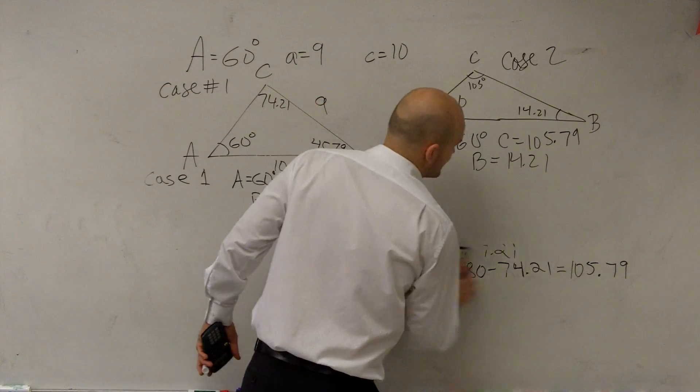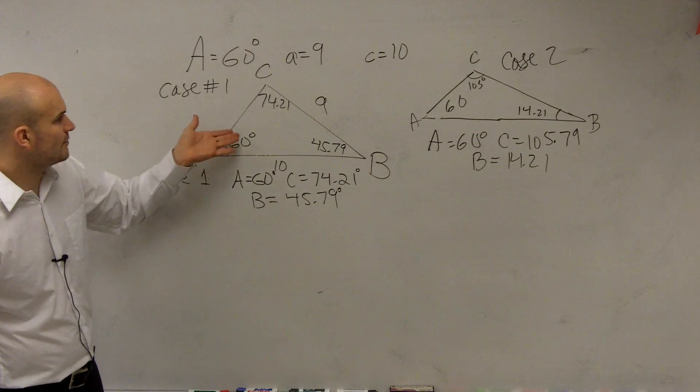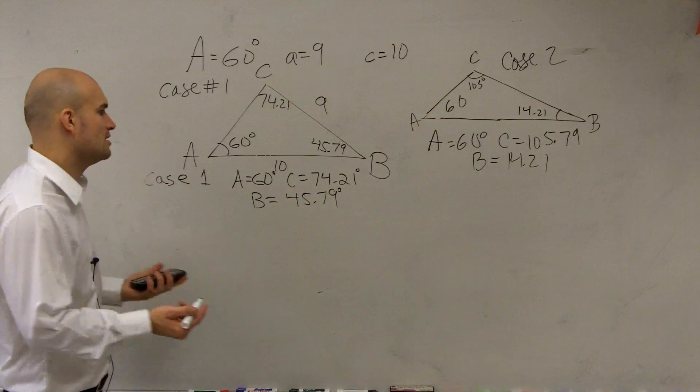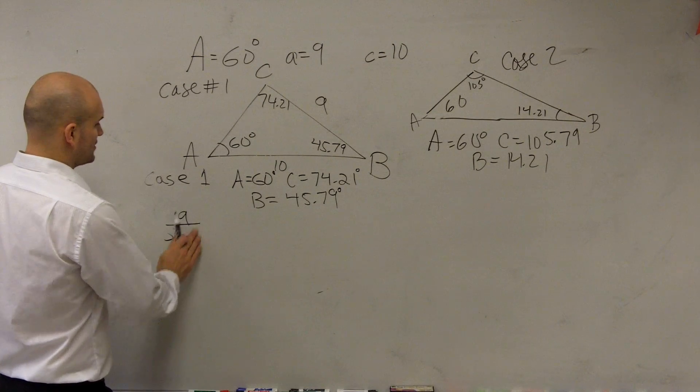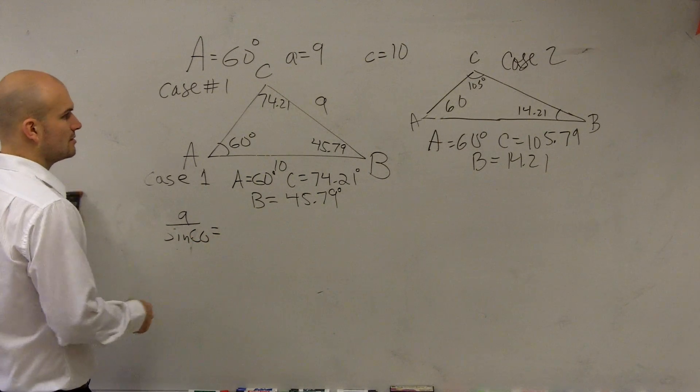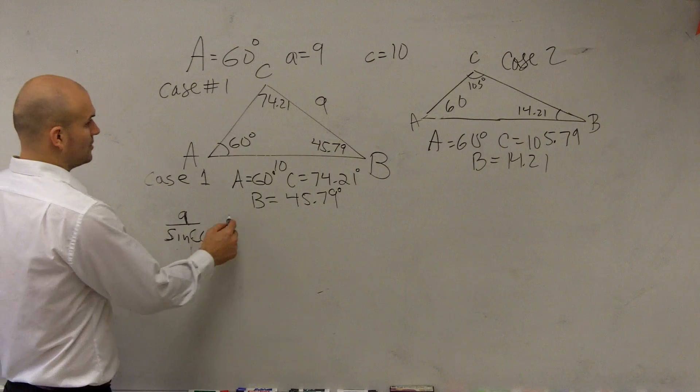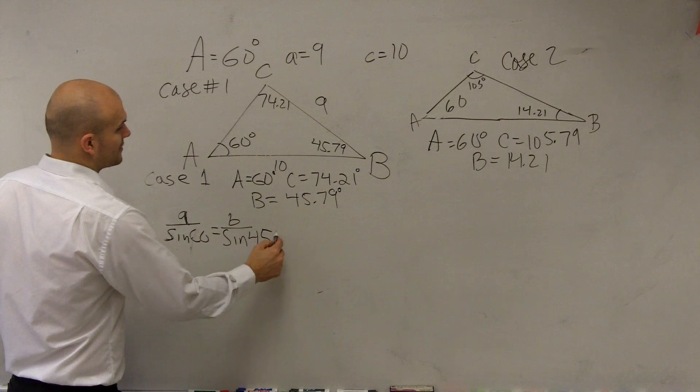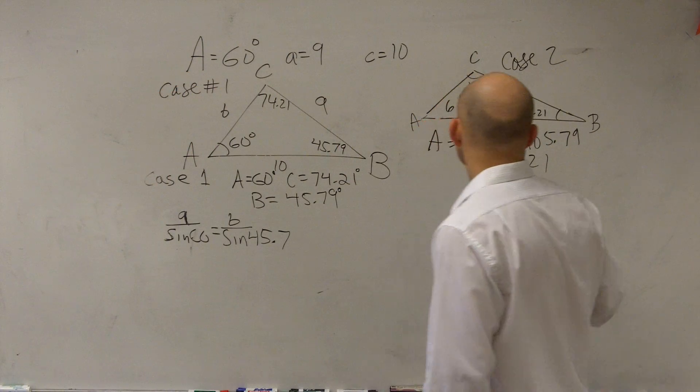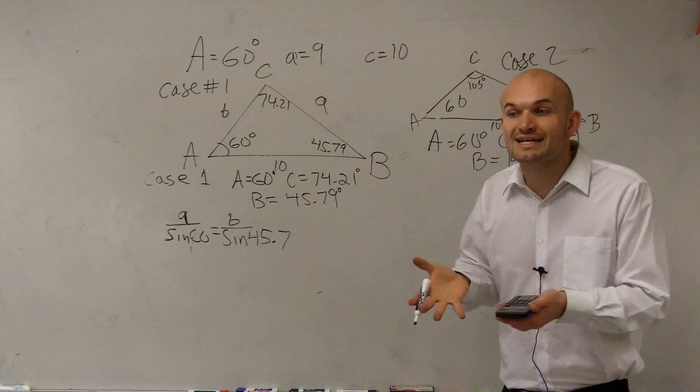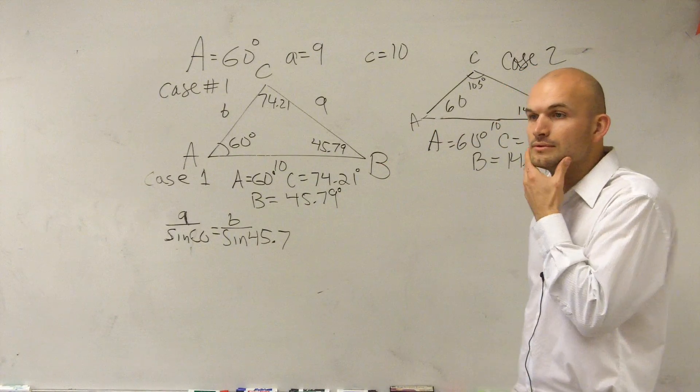This is case number two. In case number two, we're saying A equals 60 degrees, C equals 105.79, and B equals 14.21. So, when we have two cases, there's two possible solutions. What we need to do is now find the rest of the information for both of them. So, when we look at this one, we already know what A is, but we don't know what B or what C are. So, we need to use the Law of Sines again. So, I can just use 9 over sine of 60 degrees equals B over, we're going to have B over the sine of 45.79. What are we trying to find? The remaining sides. We don't know what B is, but we know C equals 10, right? We can't use the Pythagorean theorem unless you have a right triangle, right? So, that's why you have to go back to using the Law of Sines.